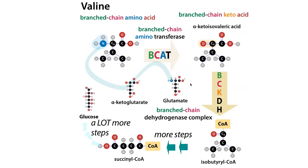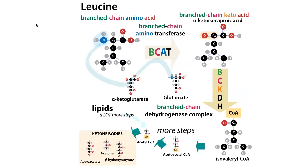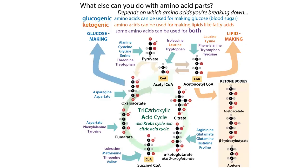In the case of valine, if we decarboxylate it, we end up with succinyl-CoA, which is a component of the tricarboxylic acid cycle, so we can use it to make glucose — glucogenic. In the case of leucine, if we decarboxylate it, we ultimately end up with acetyl-CoA, from which we can make acetoacetate, acetone, and beta-hydroxybutyrate — the ketone bodies — but nothing in the pathway, so leucine is ketogenic but not glucogenic. In the case of isoleucine, we get some ketone bodies but also succinyl-CoA, so isoleucine is both glucogenic and ketogenic.